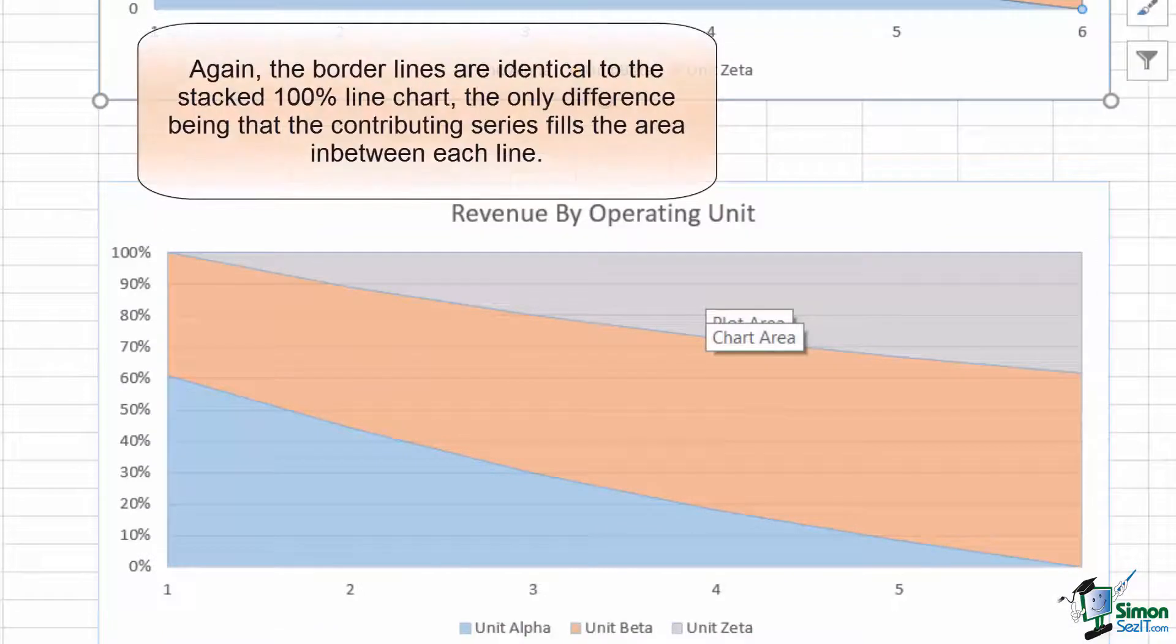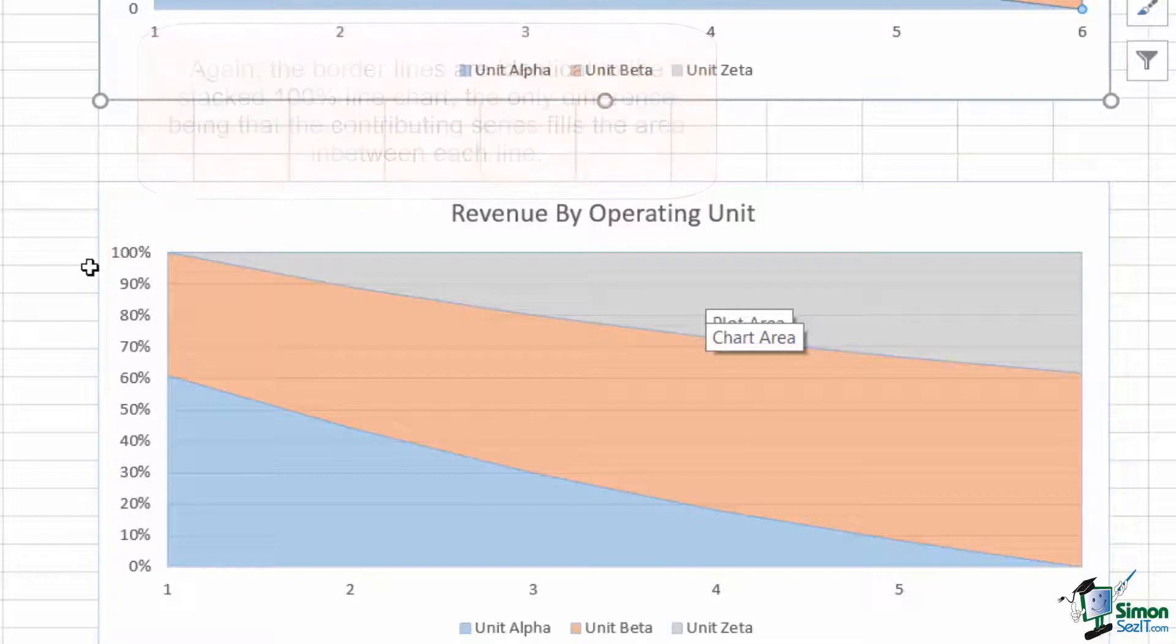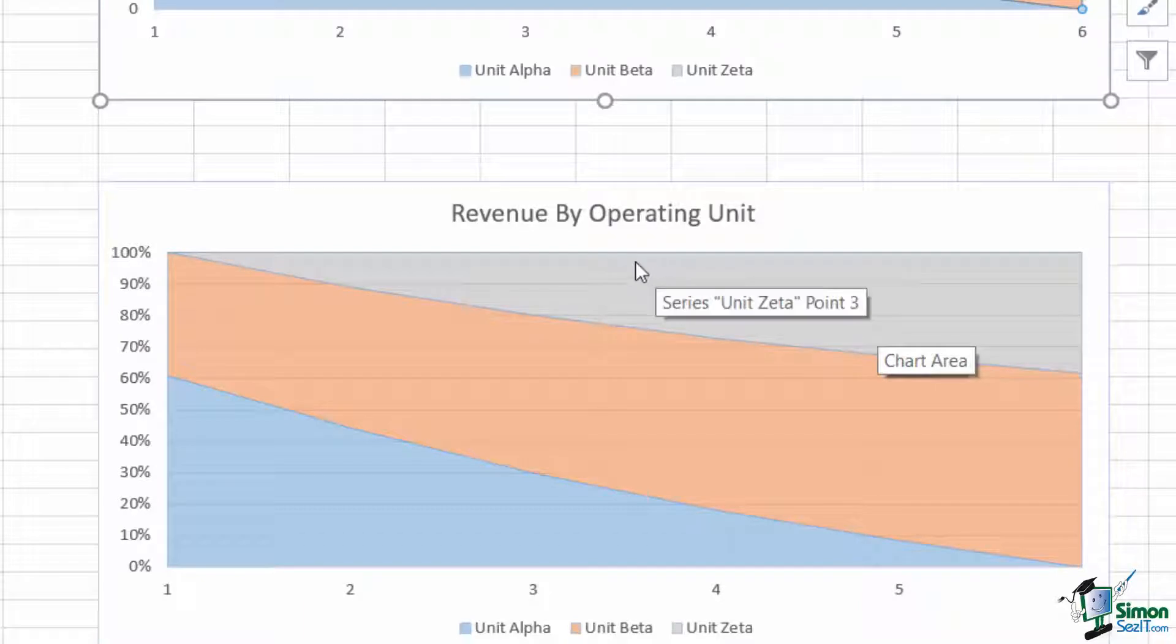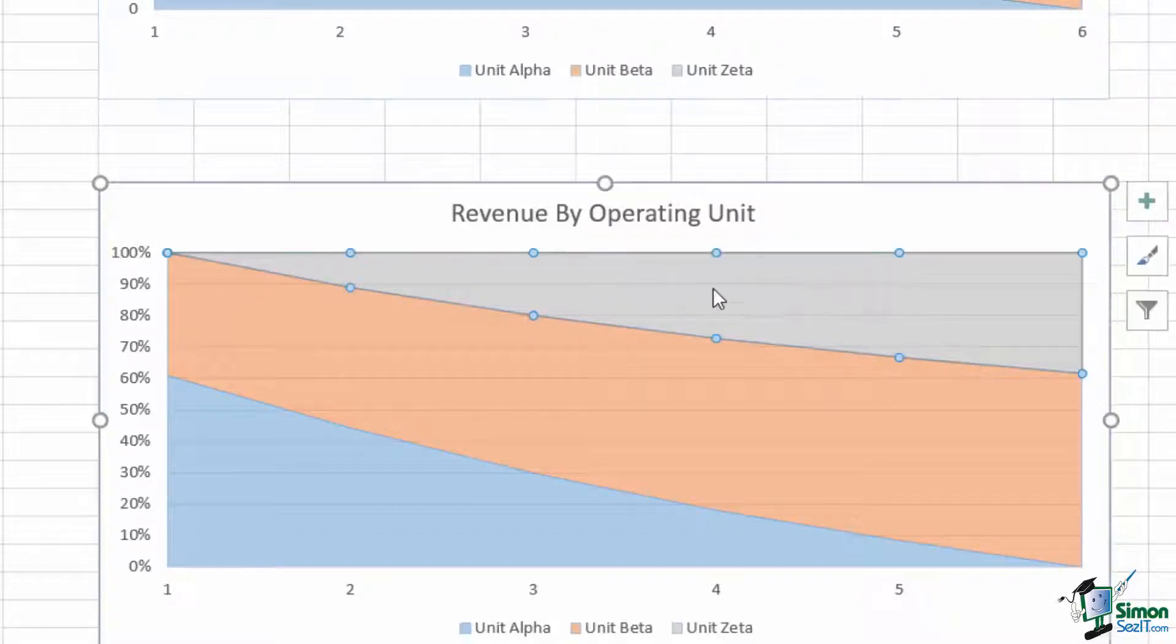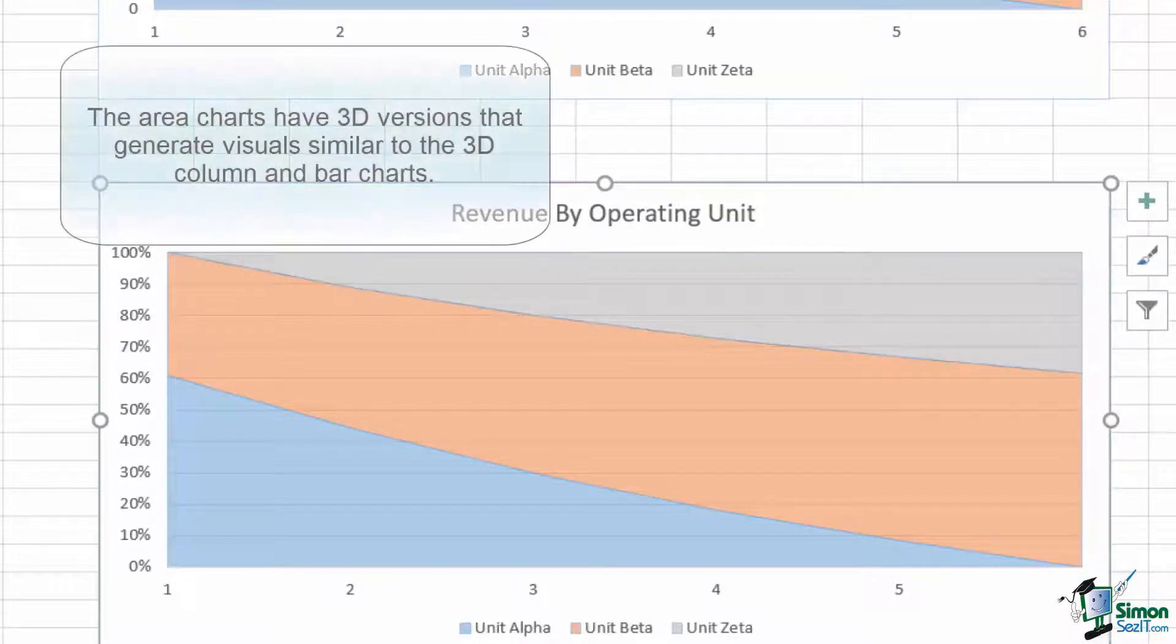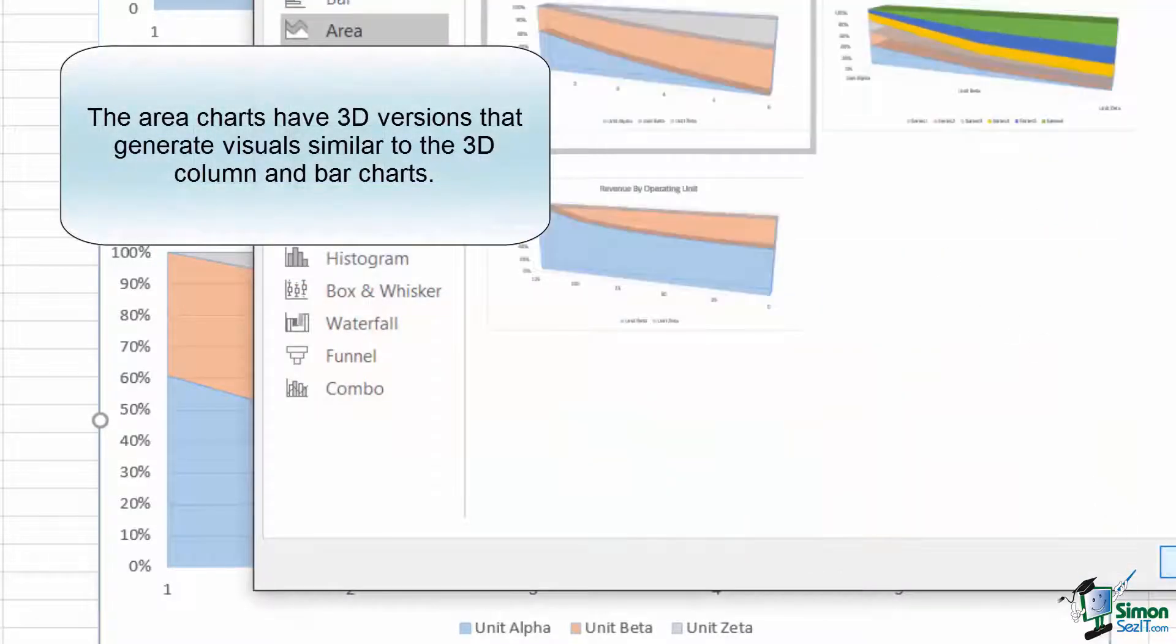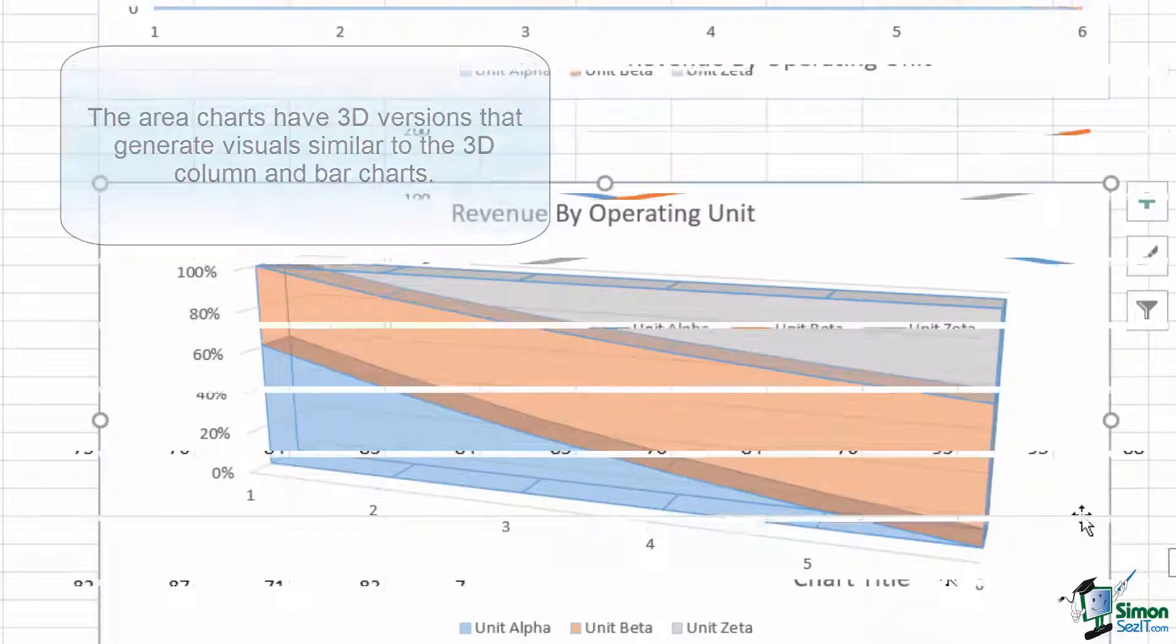Finally, the stacked 100% area chart corresponds to the 100% stacked lines and 100% stacked columns. The total gets set at 100%, with each individual component being filled in with the color that makes up that percentage. So for this gray at the very end, since the height goes from 70% to 100%, that means that approximately 30% of the revenue is contributed by unit zeta. Each of these also has a 3D look, to give your charts a little bit more of a wow factor.